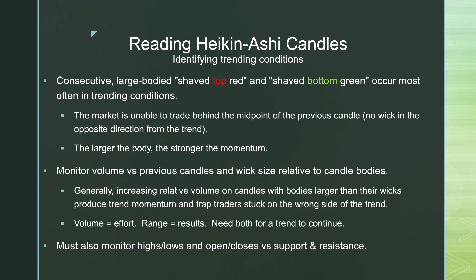This is especially true when there is a wick on either side and the body is larger than the wick — the larger the body, the stronger the momentum. If there's a huge wick, be a little cautious. Generally, increasing relative volume from one candle to the next and bodies larger than their wicks will make trend momentum that traps traders on the wrong side. The alpha of this strategy is understanding that when you have consecutive shaved-bottom green candles with larger bodies than their wicks, that momentum will trap bearish traders on the other side.